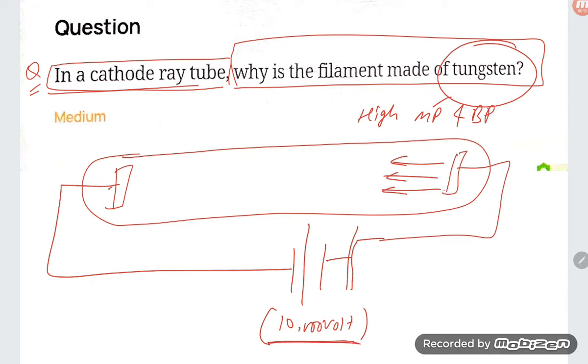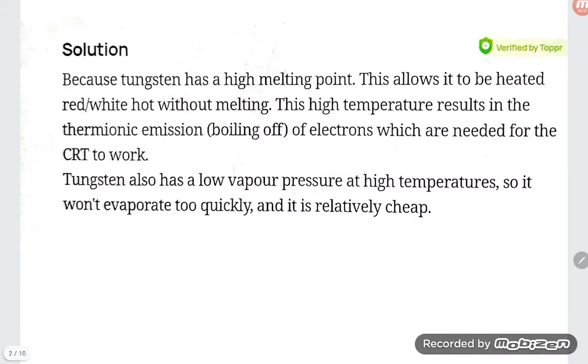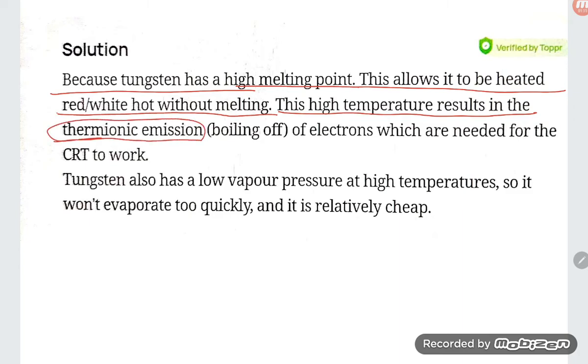Because tungsten has a high melting point, this allows it to be heated red-white hot without melting. This high temperature results in thermionic emission - the boiling off of electrons which are needed for the CRT to work.